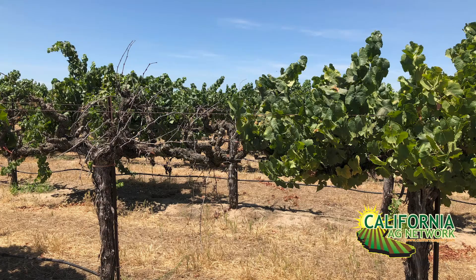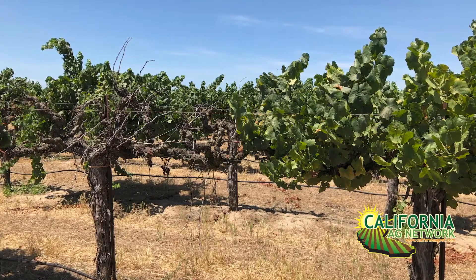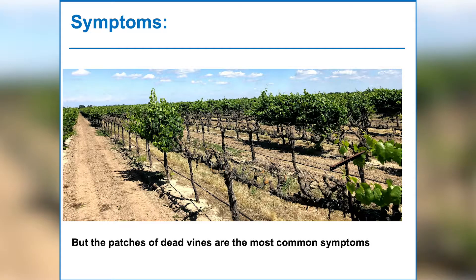Sudden vine collapse is a disease complex that we have been dealing with for the last 10 years. The reason it is called a disease complex is that it is not caused by a single microorganism or pathogen — it is a complex of pathogens. Originally we found this disease mostly in Lodi grapevine growing areas, but later we found out it is actually more widespread than just the northern part of the Sacramento Valley.